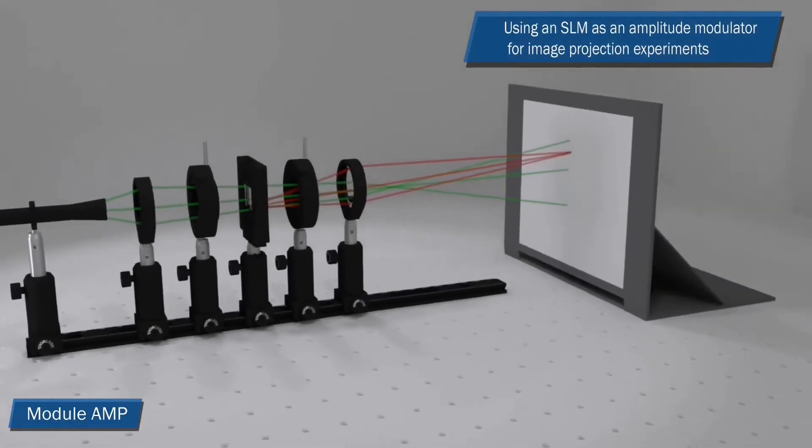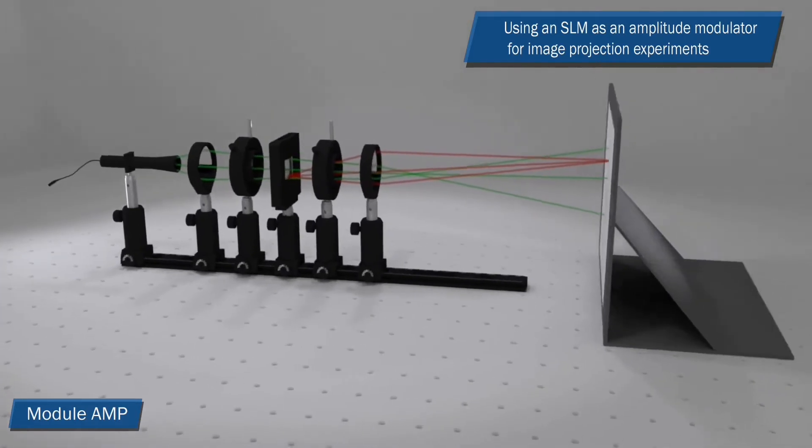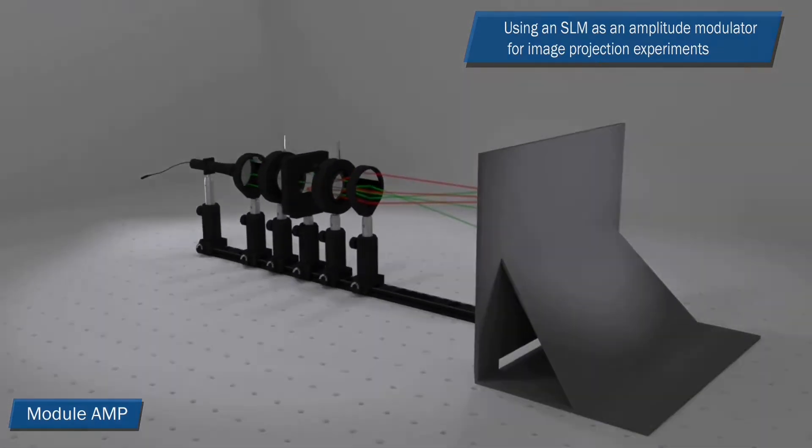In the AMP module, the Spatial Light Modulator is used for Amplitude Modulation in Image Projection Experiments.